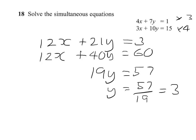So if we take the value of 3 and substitute it into the top equation, we can find the value of x. We'll have 4x plus 7 times 3. Remember the 3 replaces the y, so 7 threes, which gives us 21, equals 1.